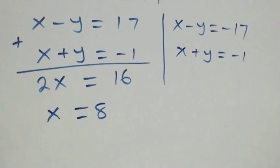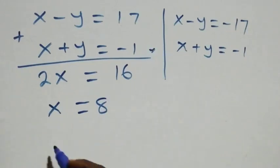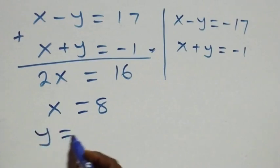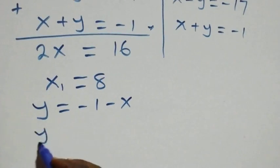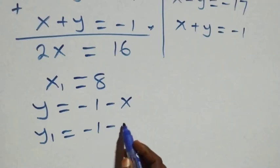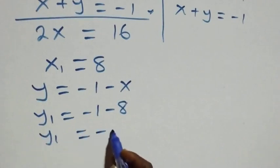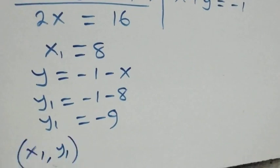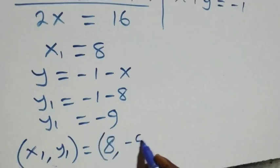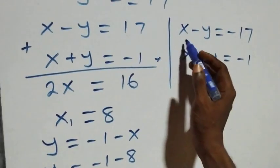Since x = 8, we find y from equation three: y = -1 - x = -1 - 8 = -9. So the first set of solutions is x₁ = 8, y₁ = -9.